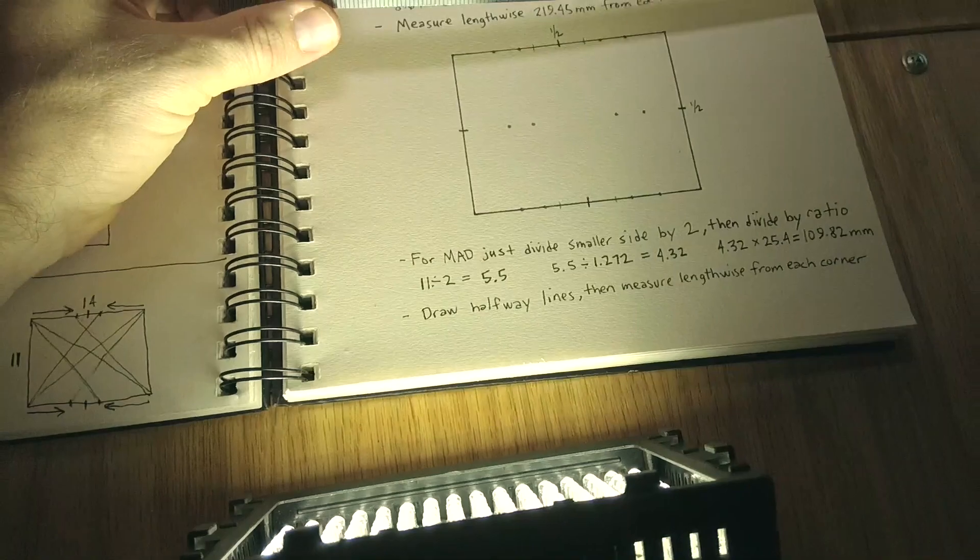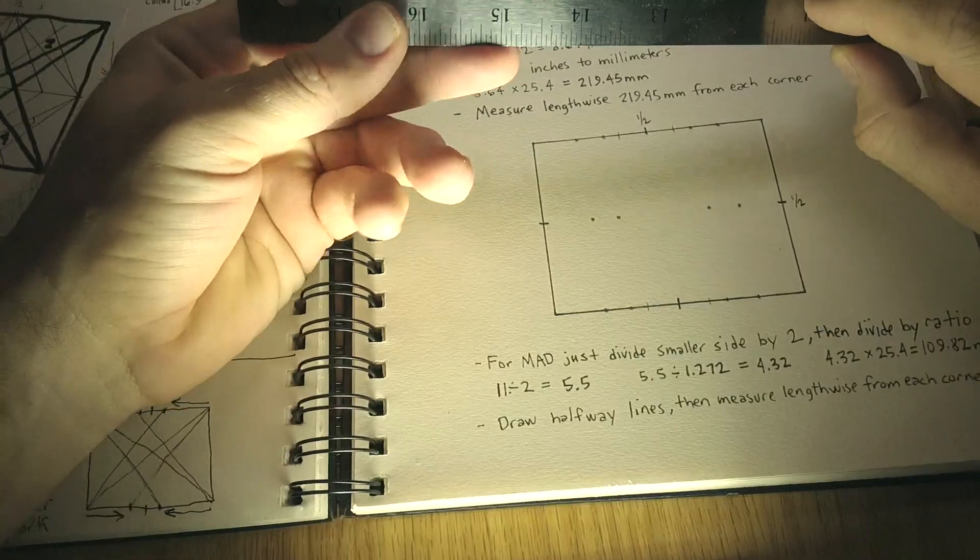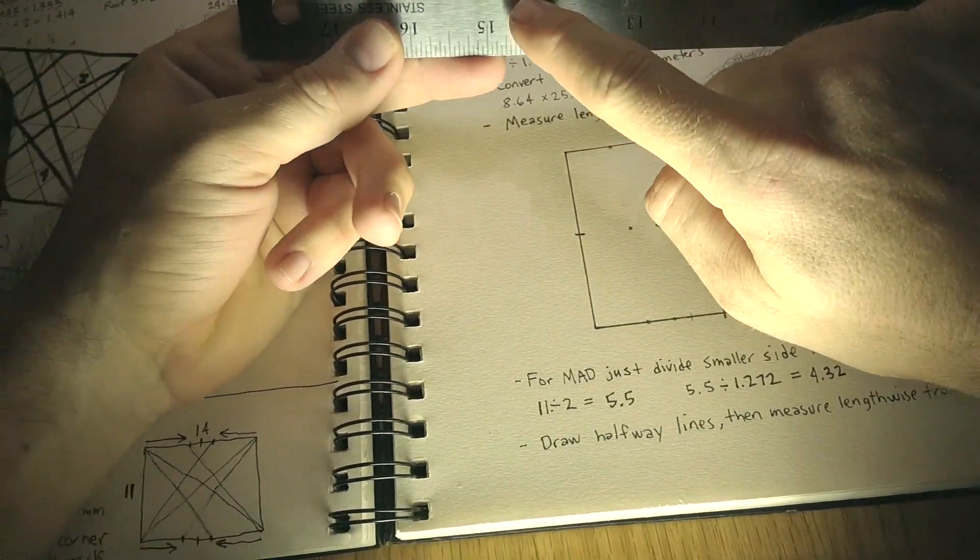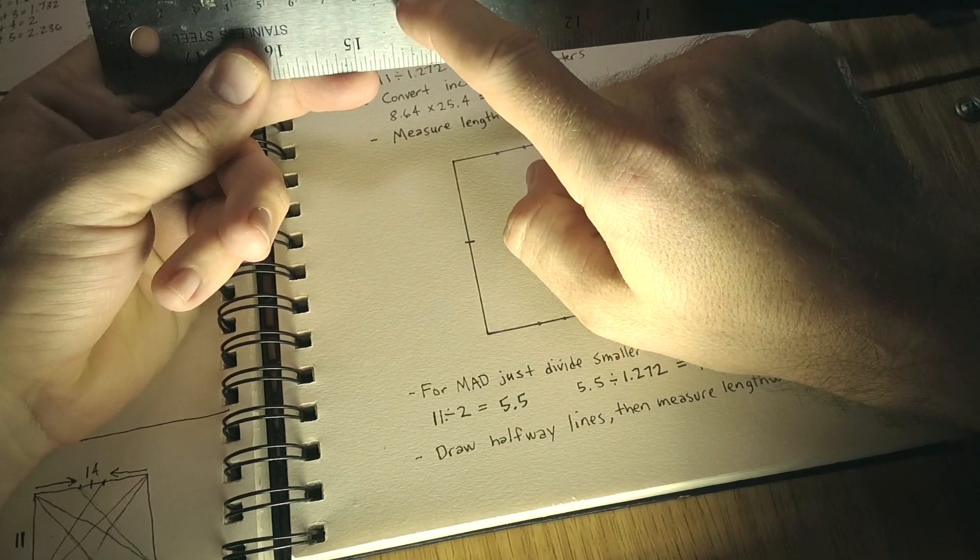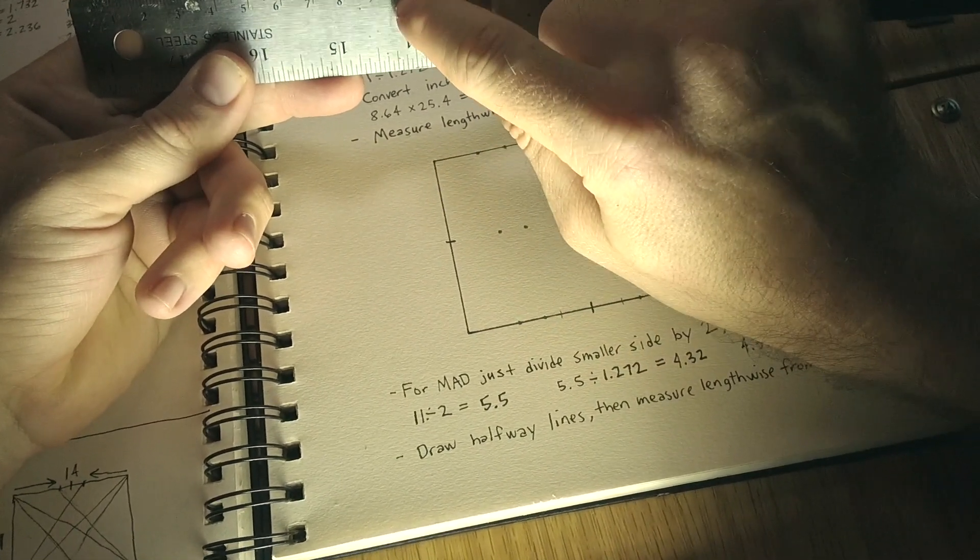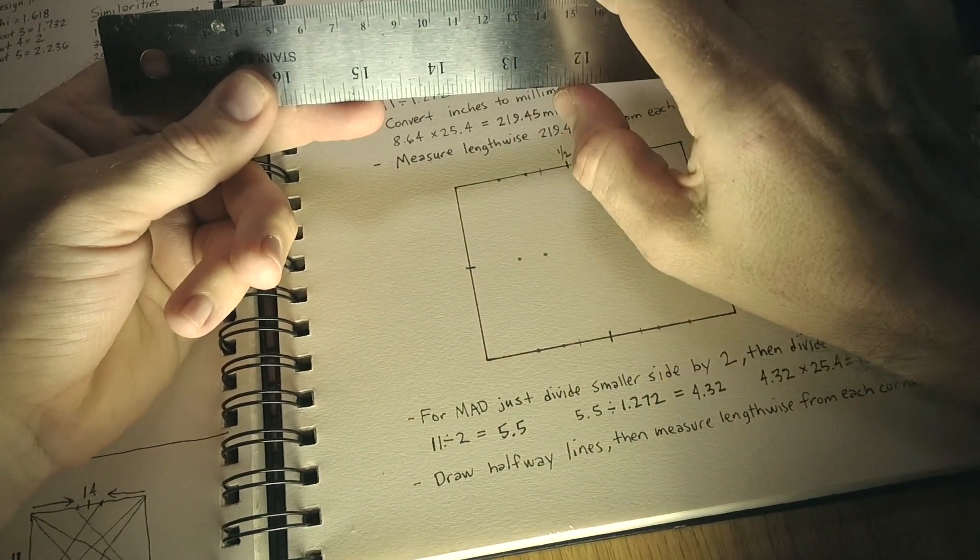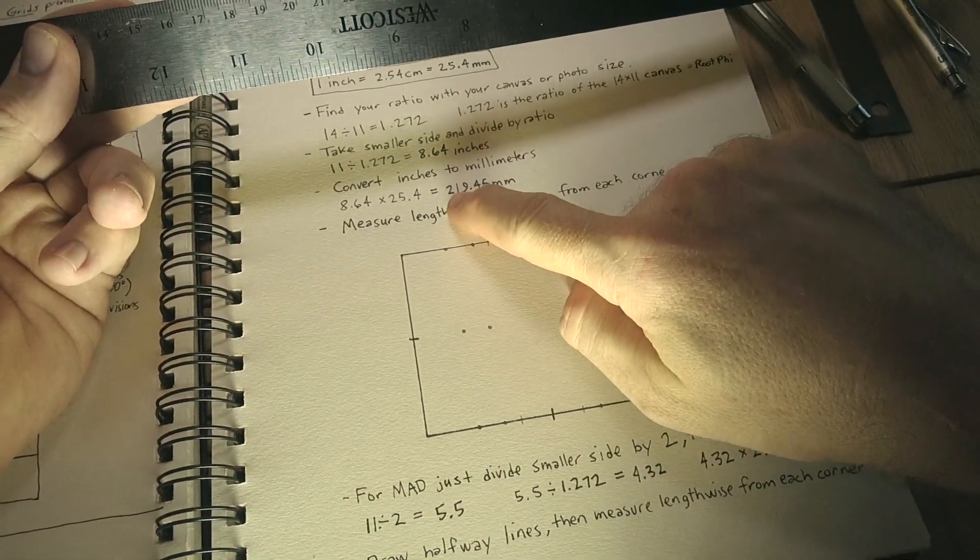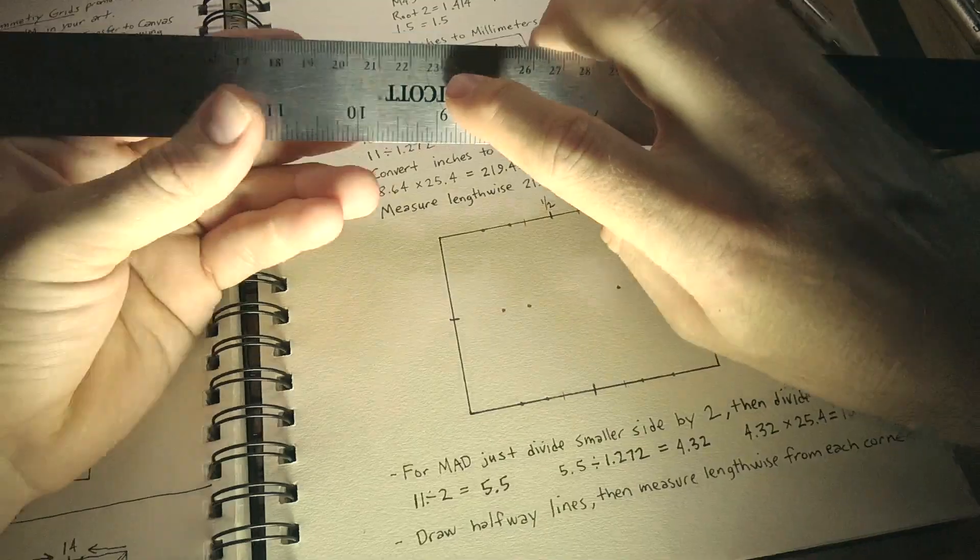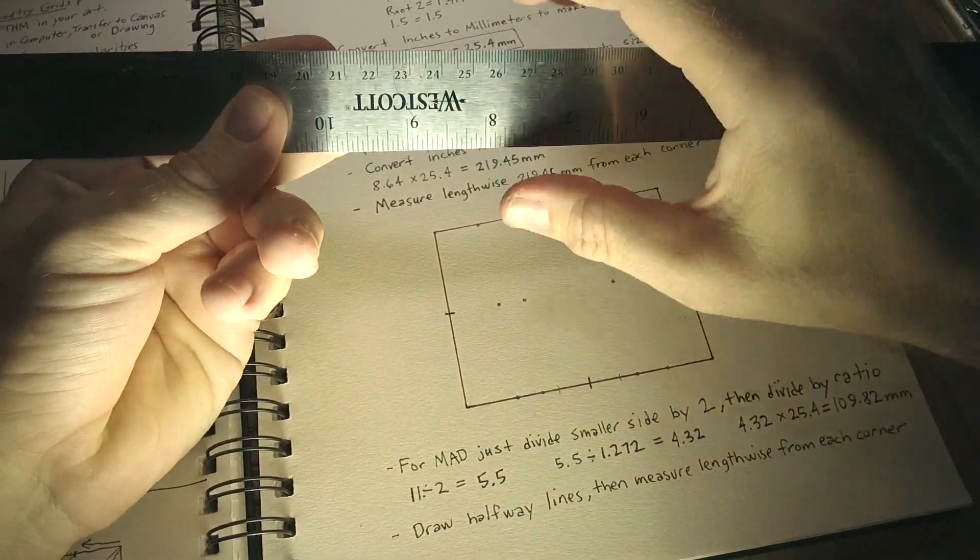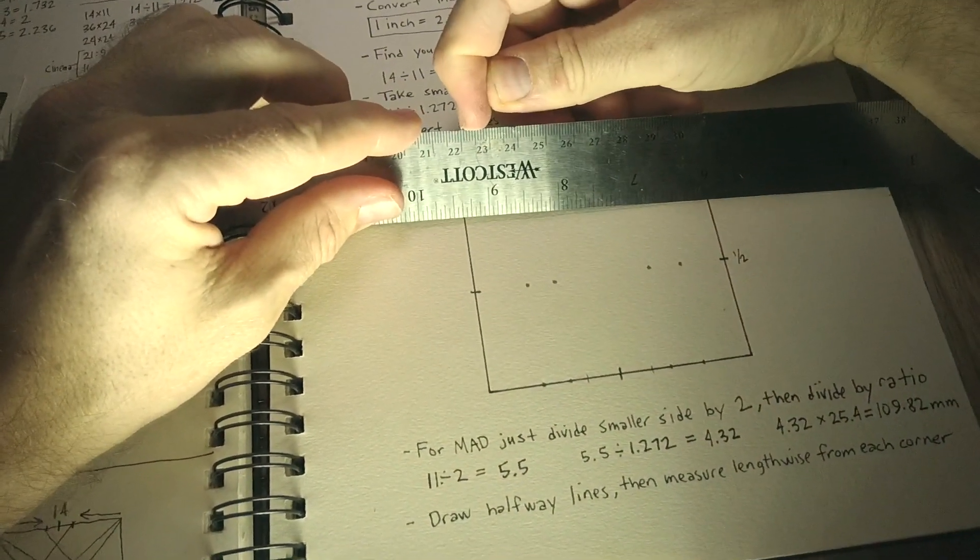So when we look at our ruler, not sure if you guys will be able to see this, but we look at our ruler and we see on the centimeter side, 10 centimeters is actually, we just add a zero on the end of that, and that's 100 millimeters. So what we're looking for is 200, basically 220 millimeters. So we just go up to the 22 and that's going to be our increment. That's going to be our measurement.